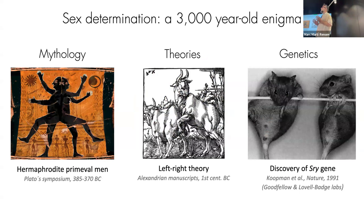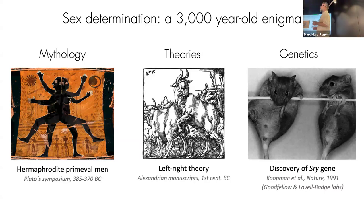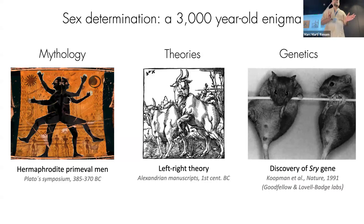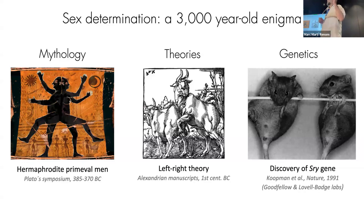Sex determination has been in people's minds for millennia. At the beginning people thought some god would decide whether it's a girl or a boy. Not long ago there was a theory about left and right — if you have sex on your right side you get a boy, left side a girl. Then science came to the rescue: in the 90s it was discovered that the SRY region on the Y chromosome gets activated during development at a particular time point, activating a cascade of other genes, and that determines a boy. If SRY is not activated, by default it will be a girl.